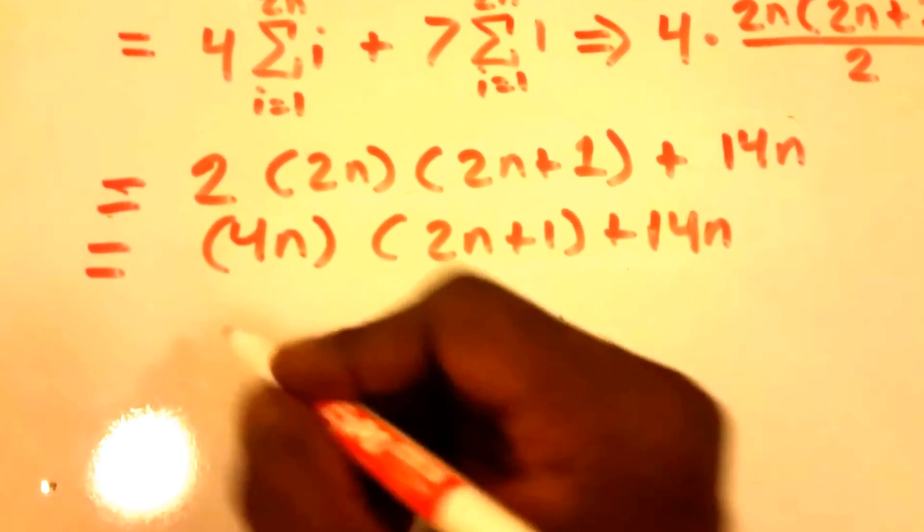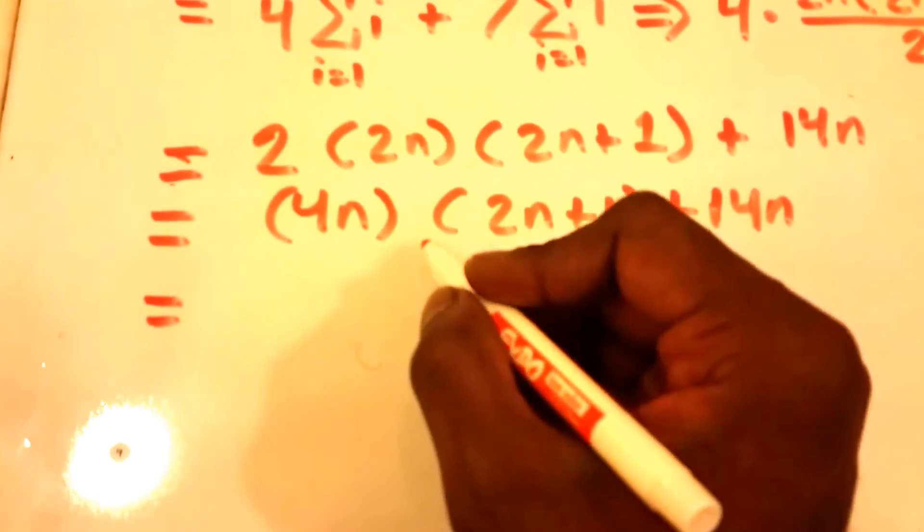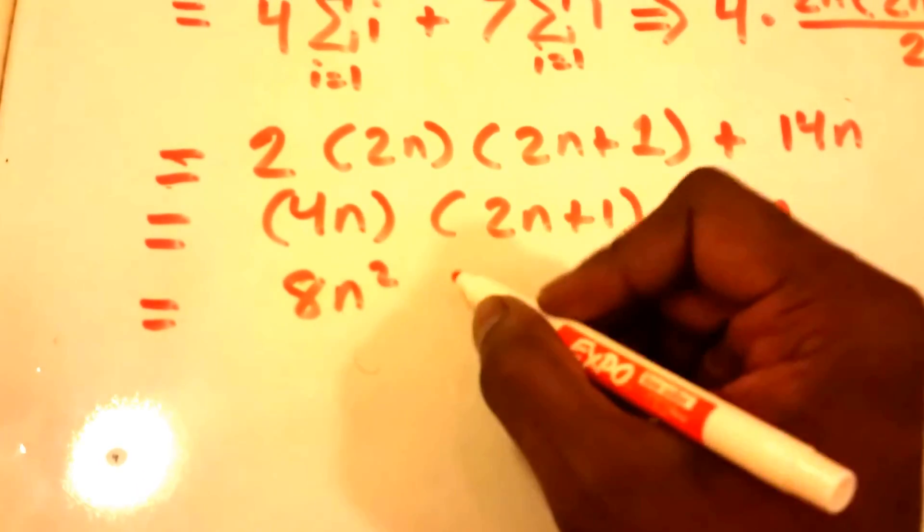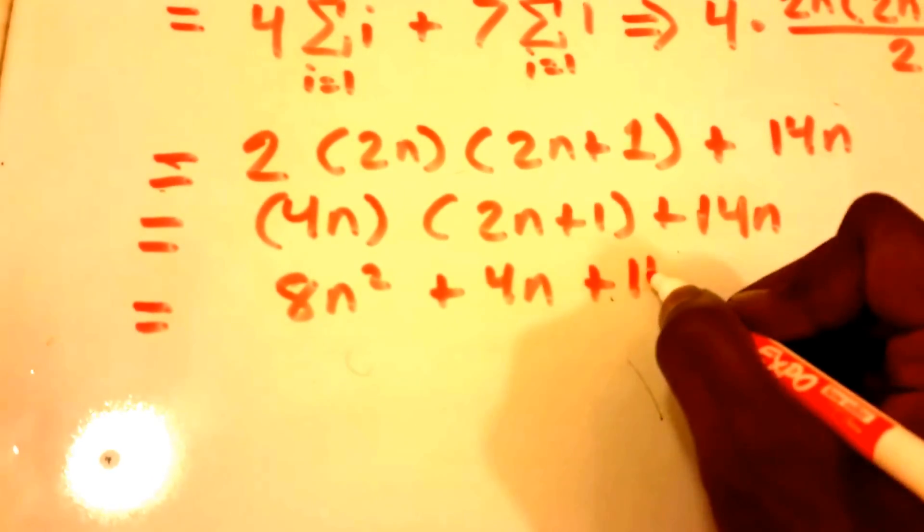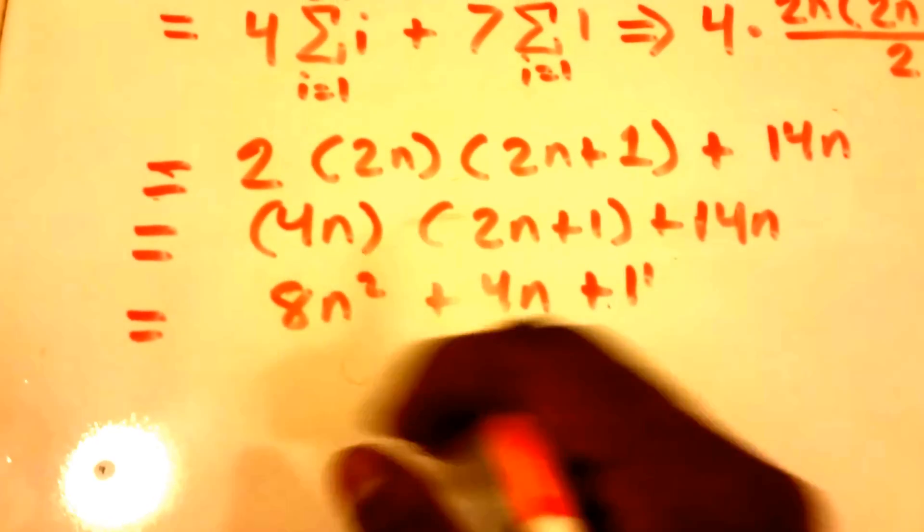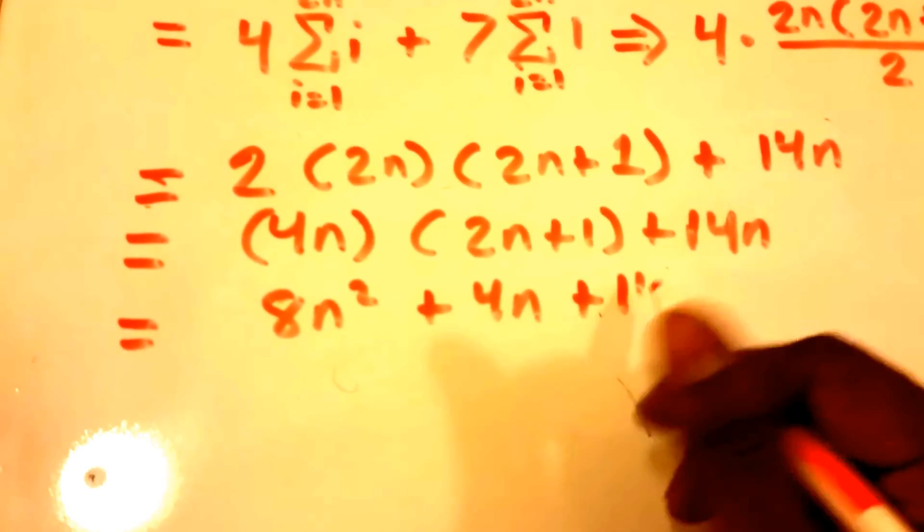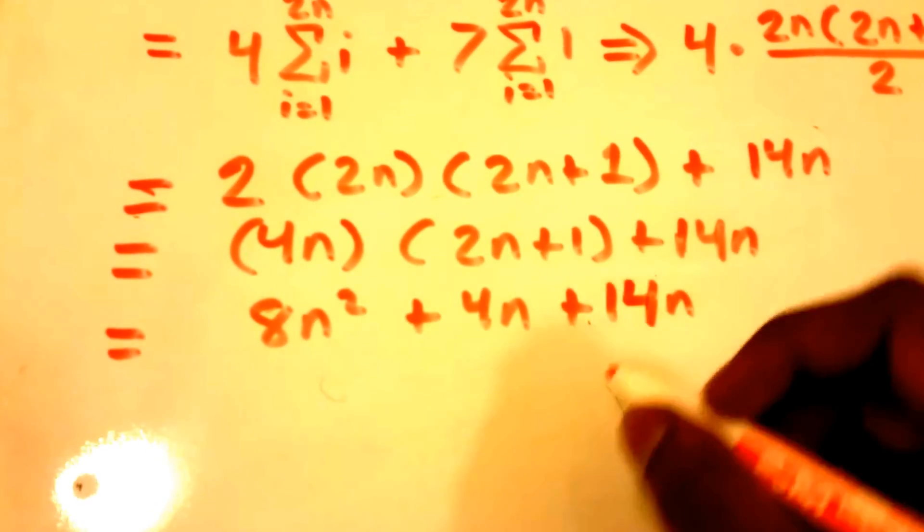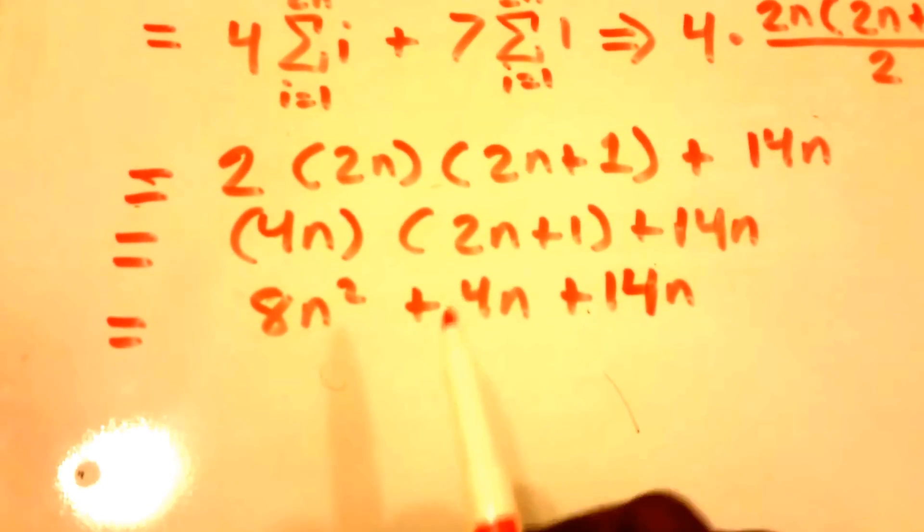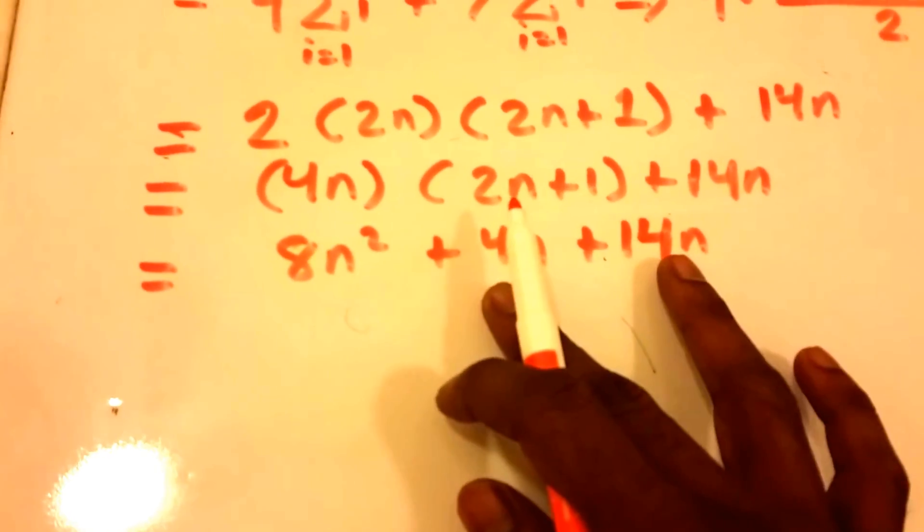Okay, and this is just equal to 8n squared plus 4n, and then we're going to add our 14n in here.